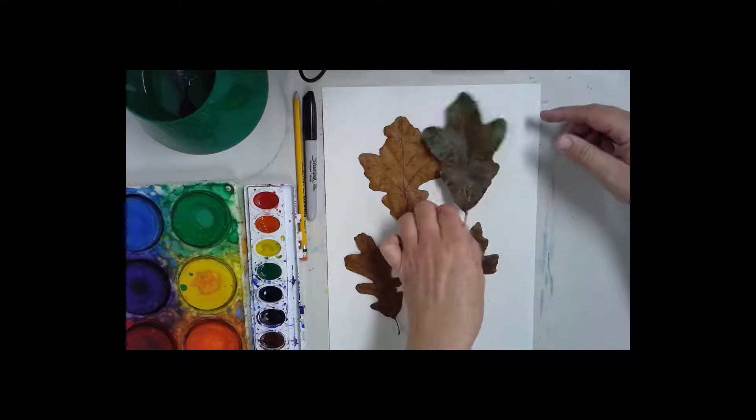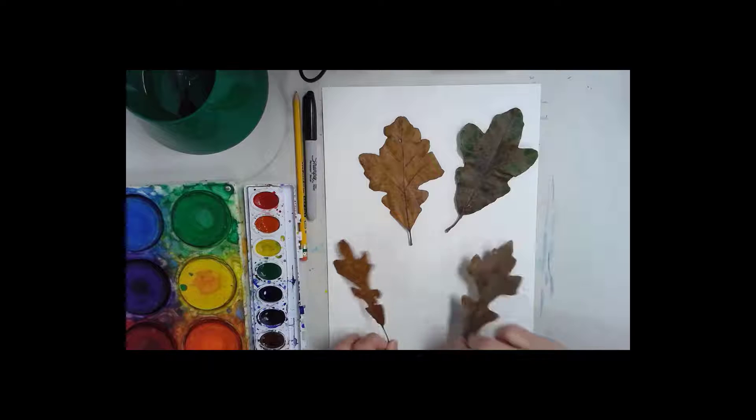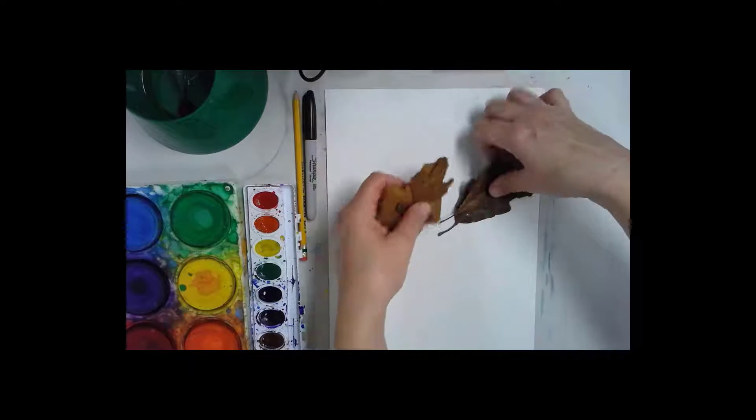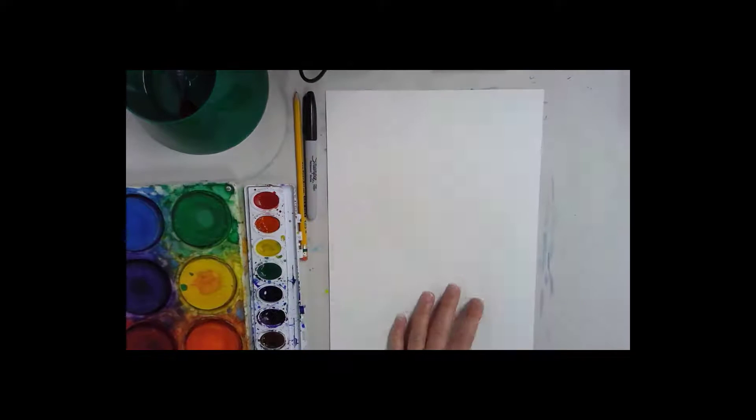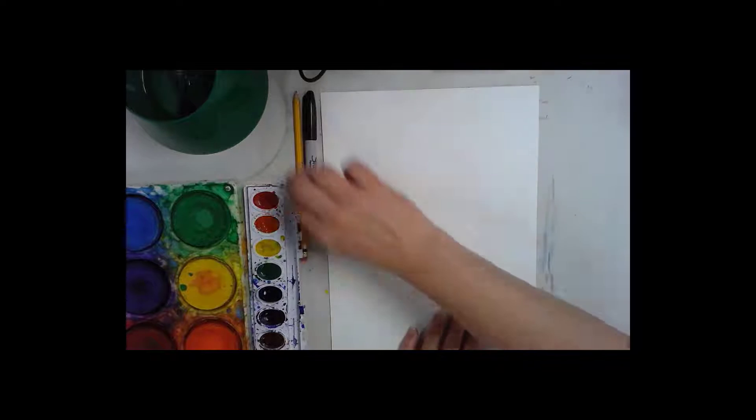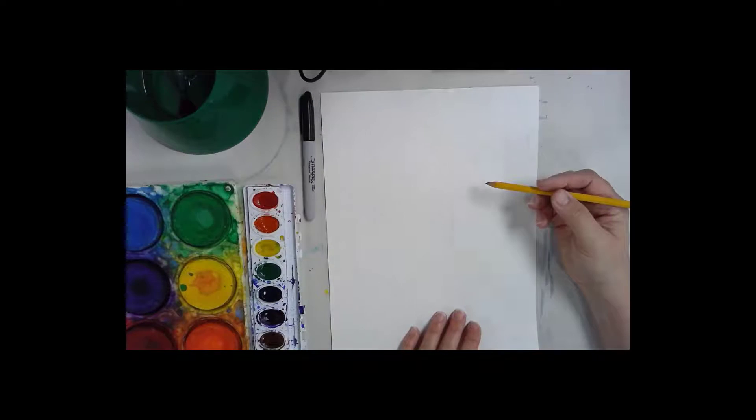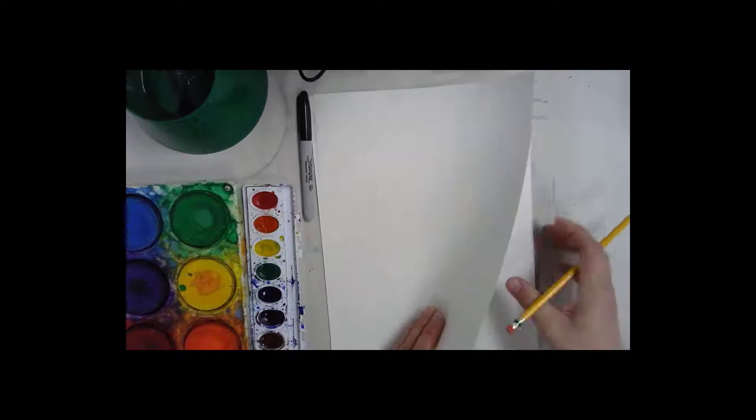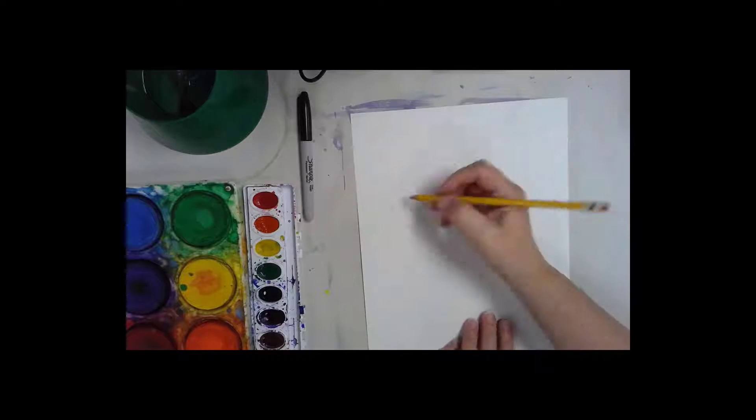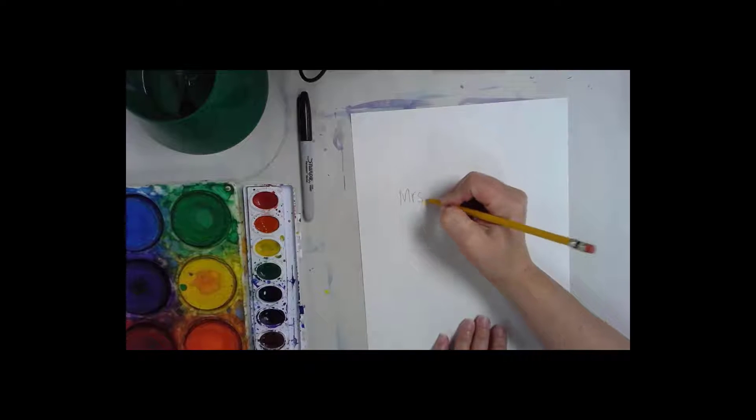So we're going to be drawing one of these and then using oil pastels to create some line patterns. Let's get started. The first thing you're going to need is a pencil and a piece of paper and you're going to want to write your name and class code on your paper.